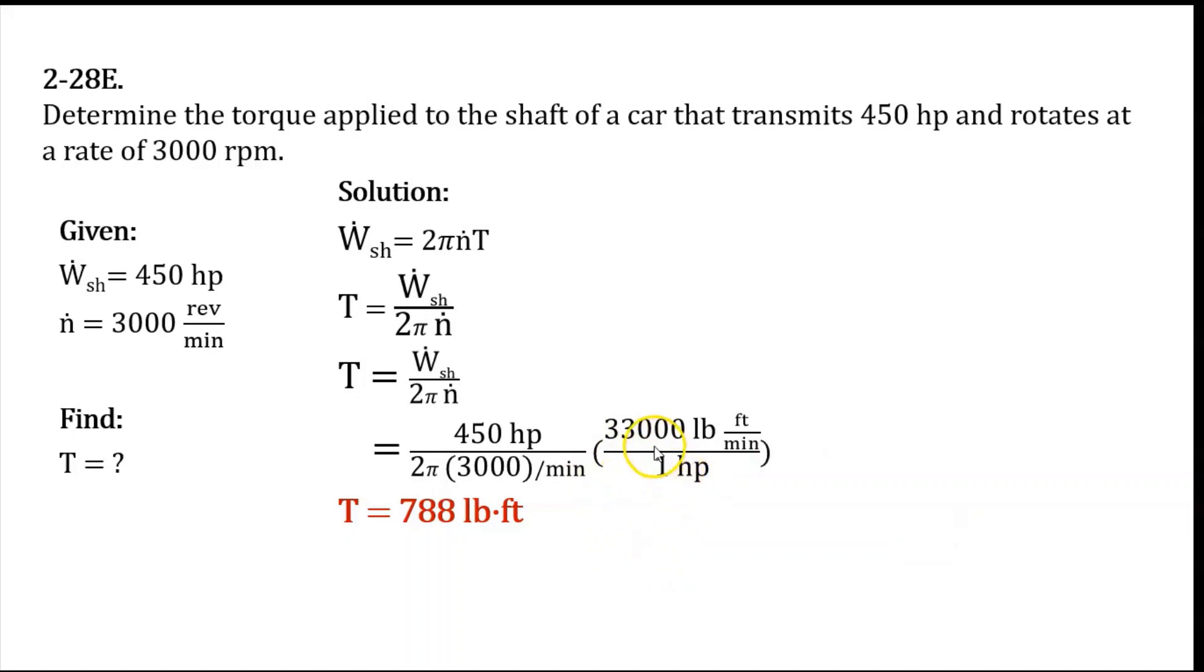There are 33,000 pound-feet per minute in one horsepower. So the horsepower and minute units will cancel. Plugging this in the calculator, we will now have the torque, which is equal to 788 pound-feet.